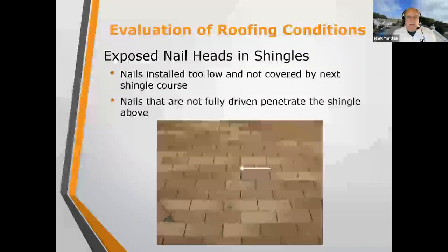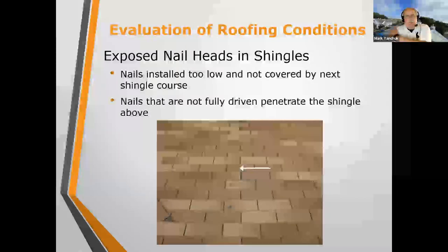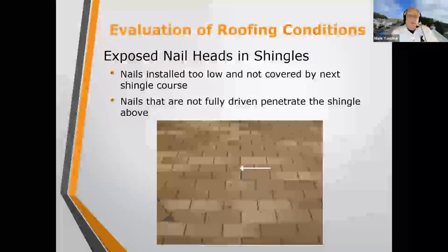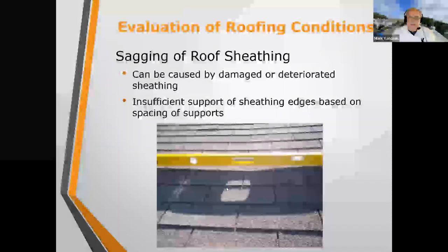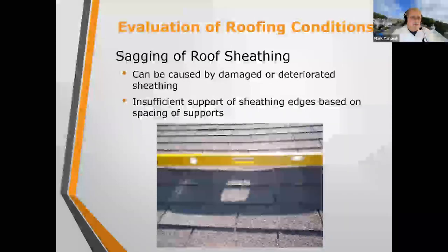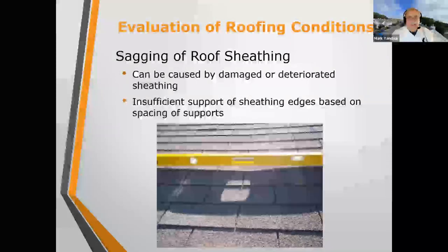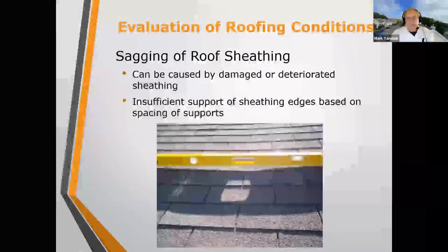If you see exposed nail heads, this is indicative of nails missing the plywood below — hitting a seam or not driven all the way in. This would require lifting the shingles to see what's going on. Sometimes we run across saggy roofs with a significant sag between trusses. That's either water getting underneath and damaging the sheathing so it's no longer supported properly, or the contractor didn't use H-clips between trusses. H-clips hold the edges together, especially when trusses are 24 inches apart.